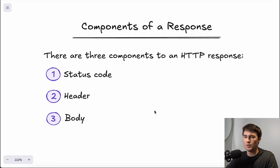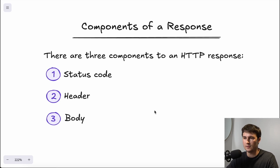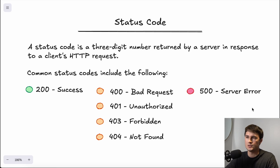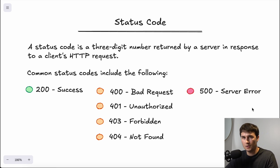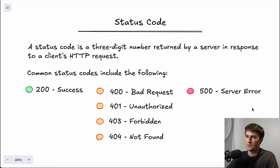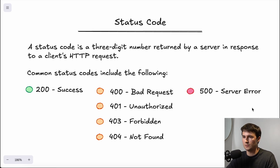Shifting gears — looking at the components of a response, there are three: the status code, the header, and the body. The status code is a three-digit number returned by the server in response to a client's HTTP request. Common codes include: 200 — request successful; 400 — bad request, meaning the server can't process the request because it's corrupted, malformed, or invalid; this is a client-side error meaning the issue stems from your device, browser, or how you constructed the request.